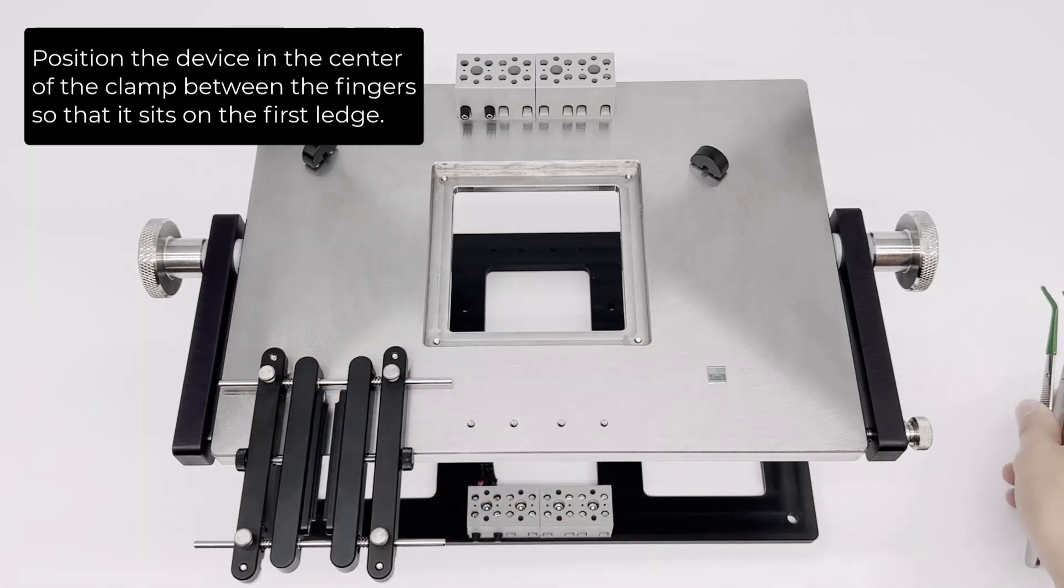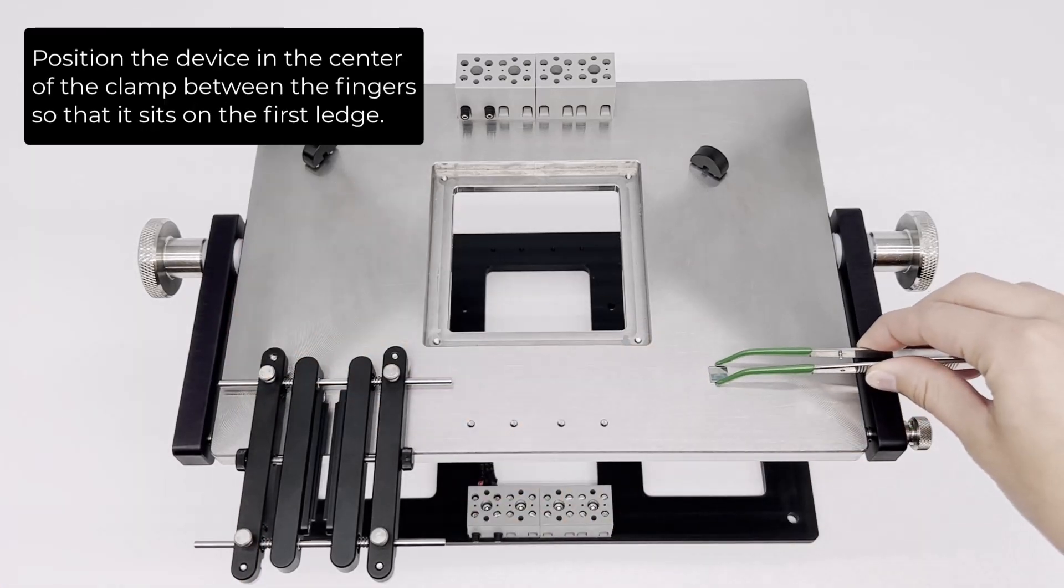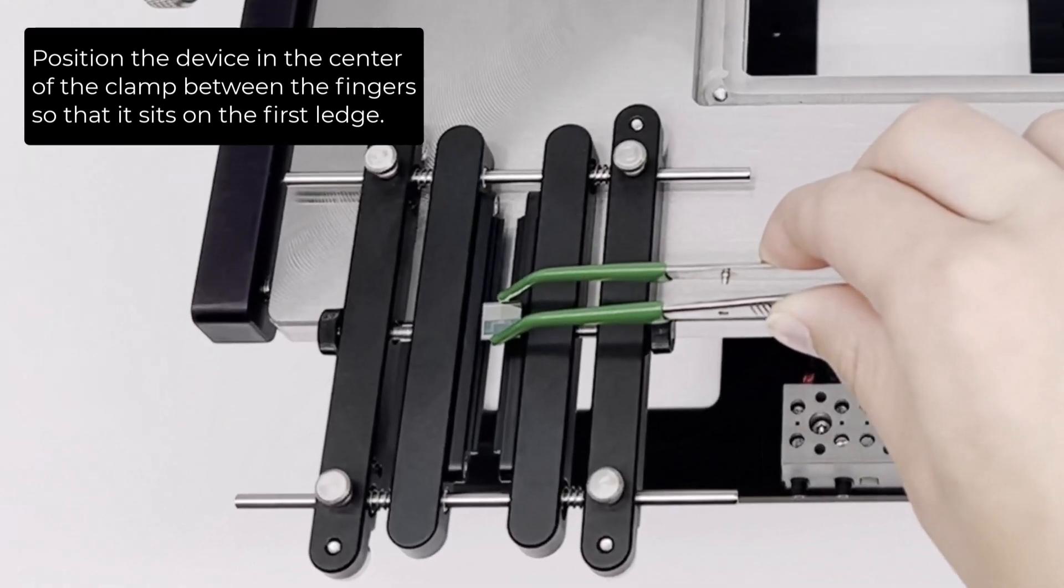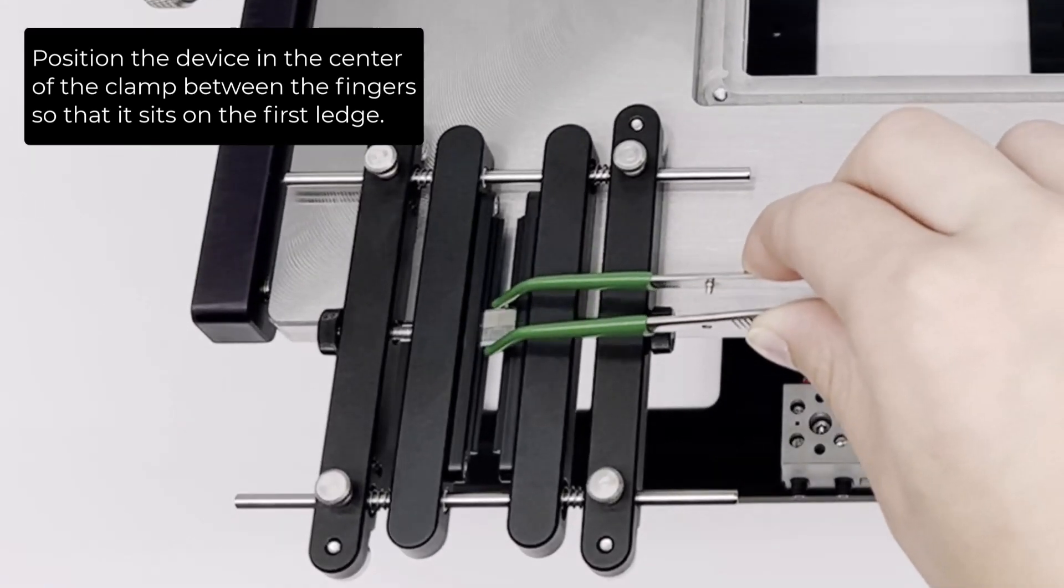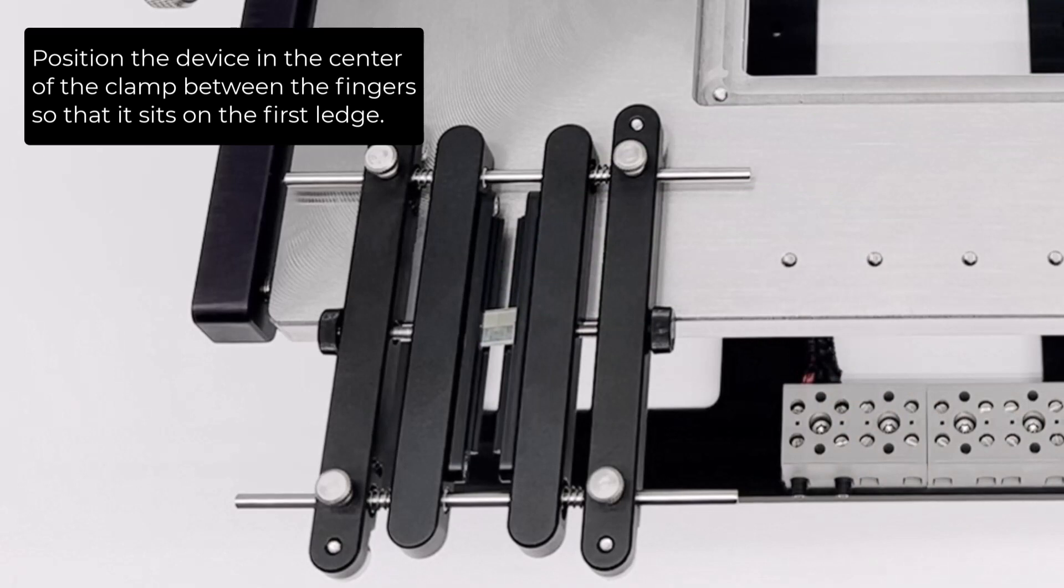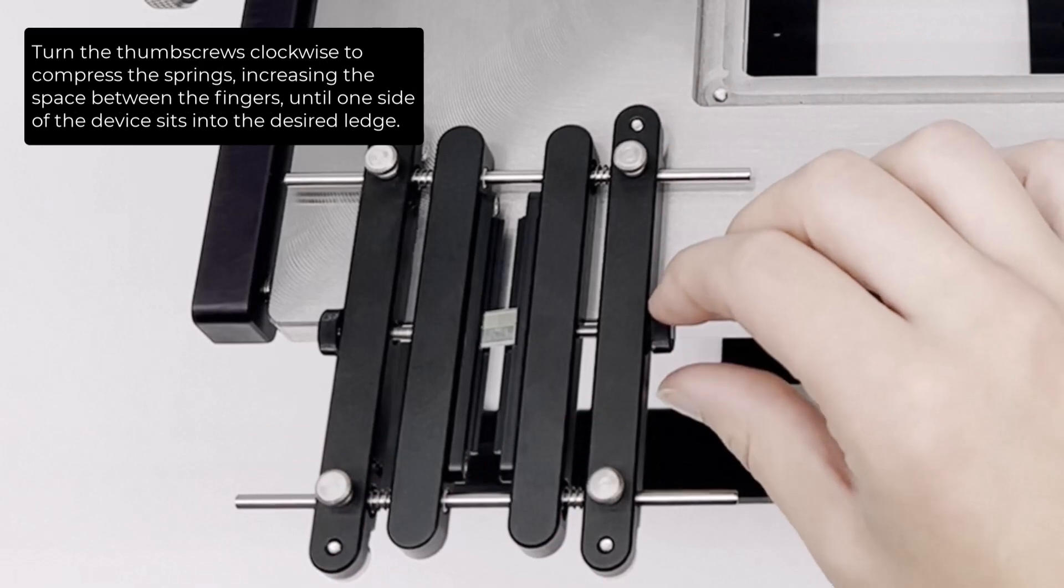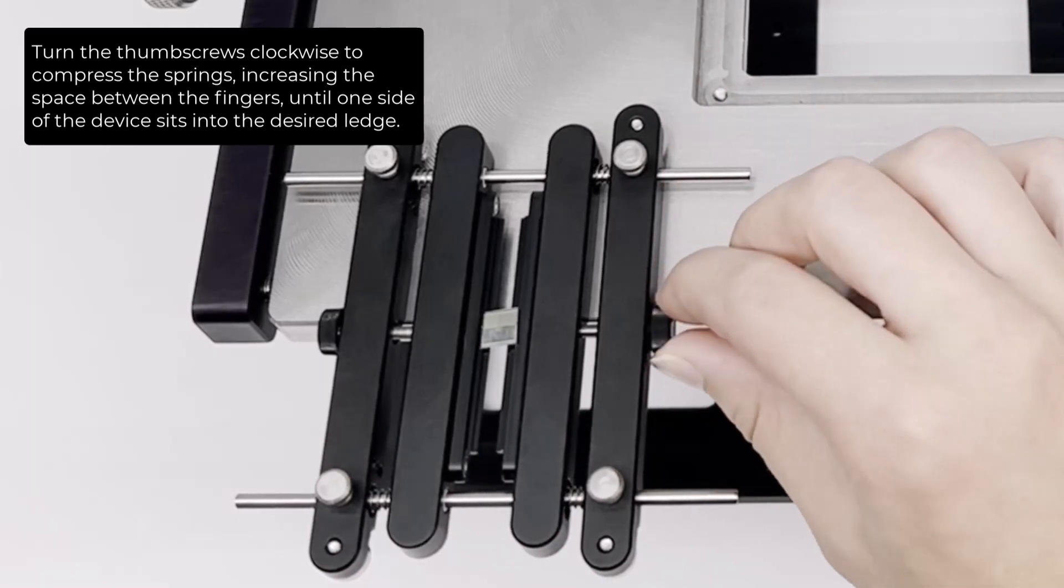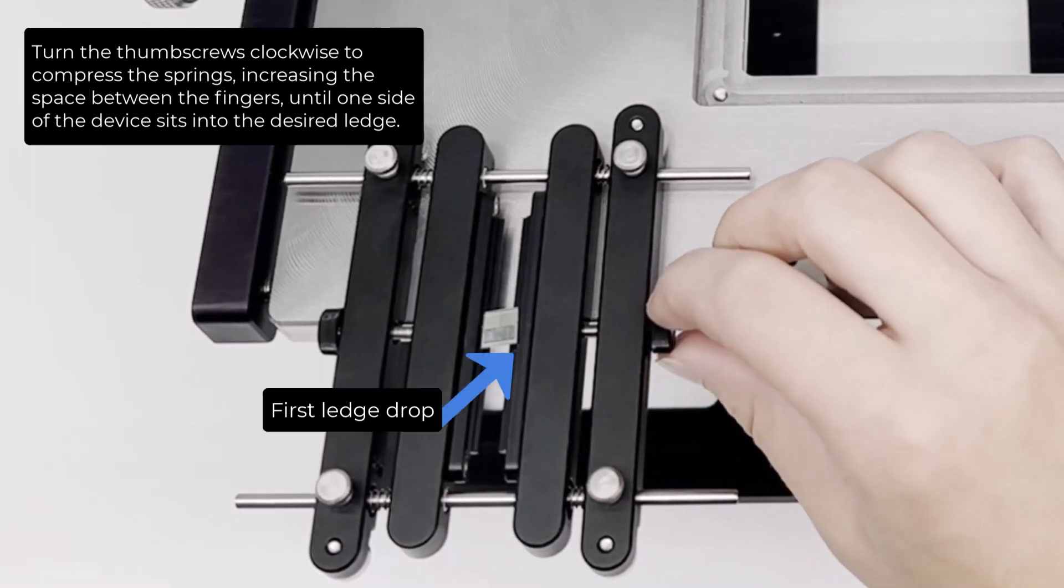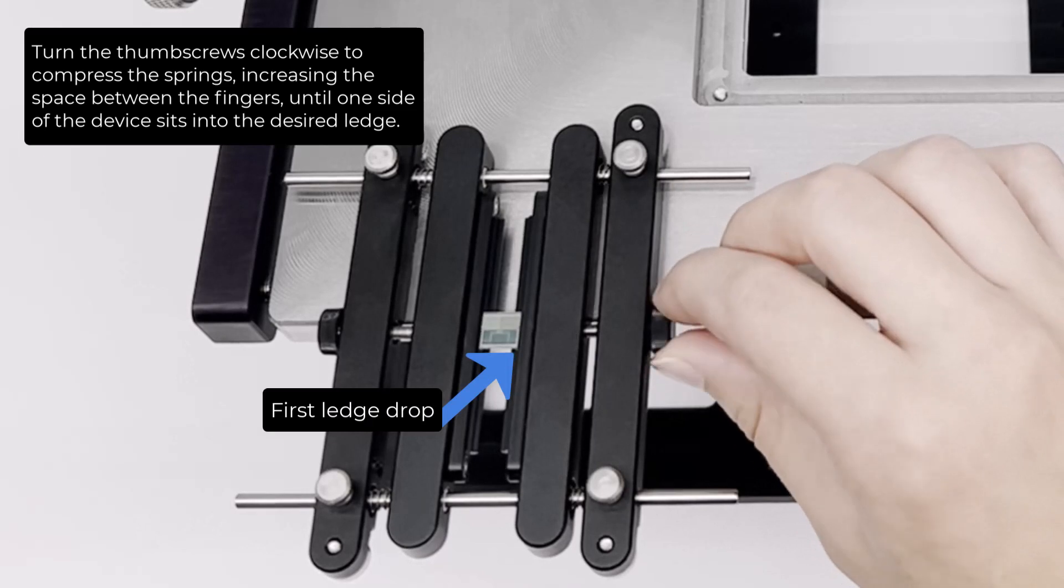Position the device in the center of the clamp between the fingers so that it sits on the first ledge. Turn the thumb screws clockwise to compress the springs, increasing the space between the fingers, until one side of the device sits into the desired ledge.